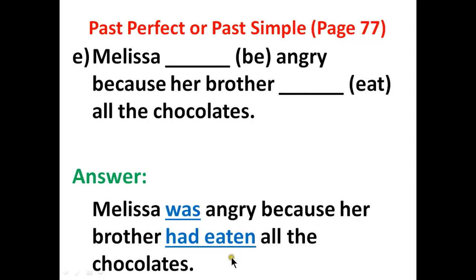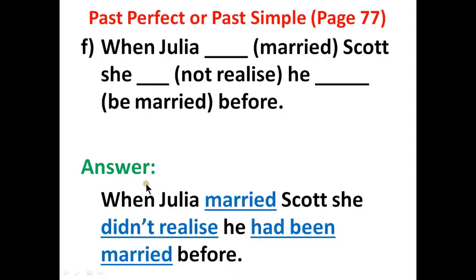Number E: 'Militia was angry because her brother had eaten all the chocolates.' Number F: 'When Julia married Scott, she didn't realize he had been married before.' Here there are three blanks. The first blank is 'married' — simple past, no change.